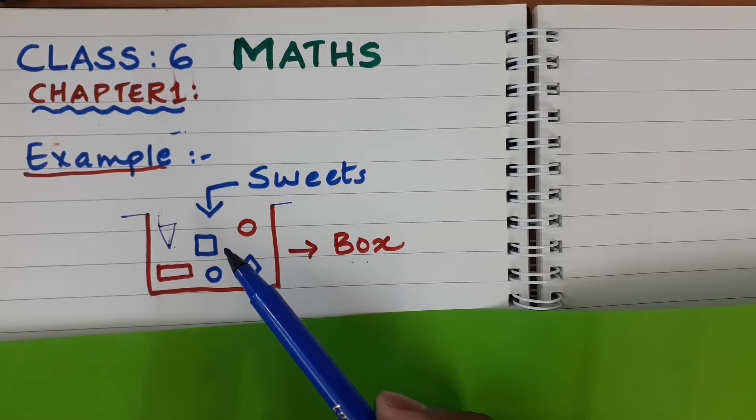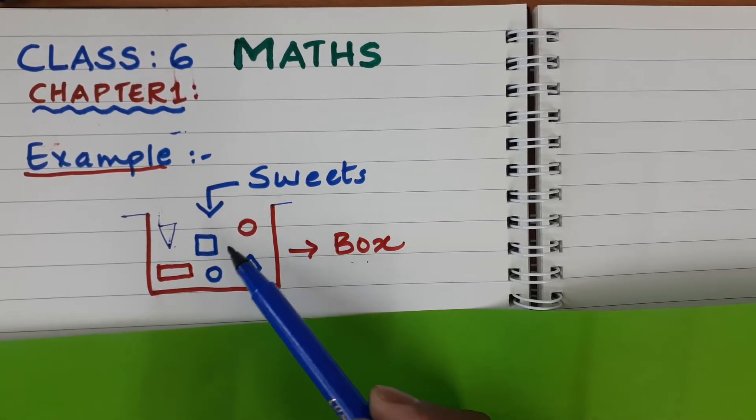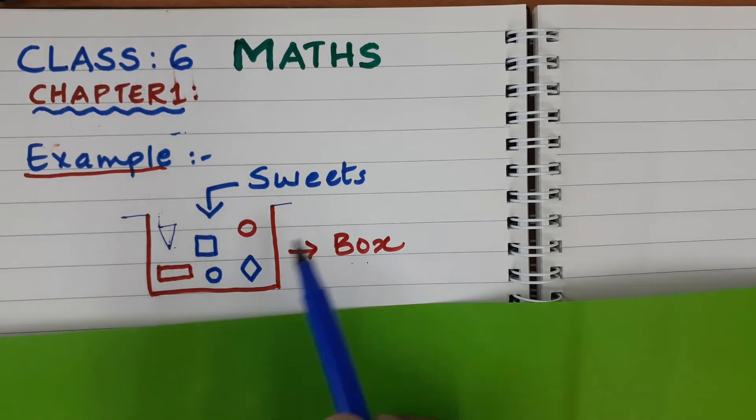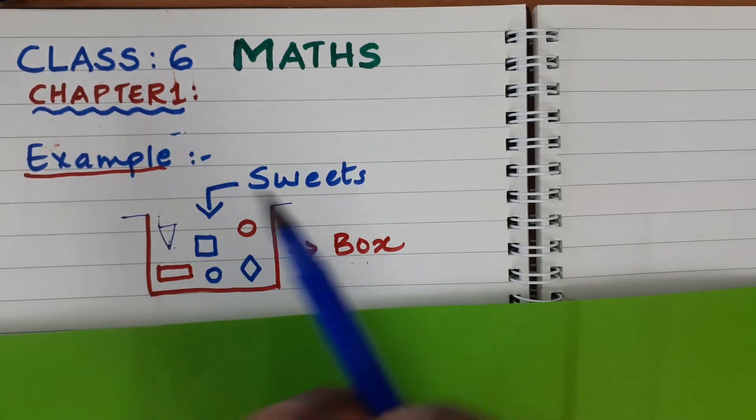How in the olden days, many years back, did people count things? If they wanted to count something, like in this example, I have taken sweets or any other objects.